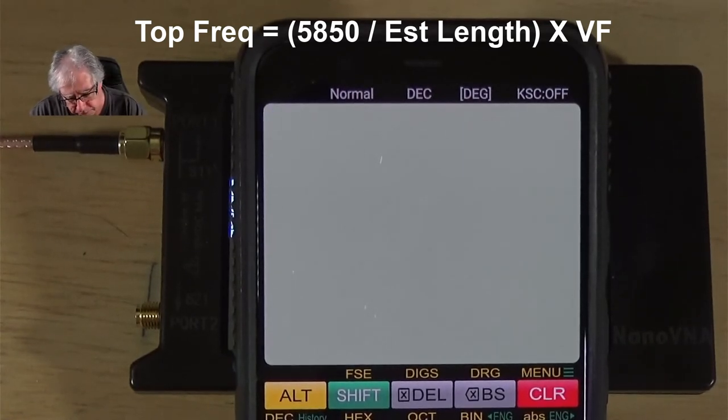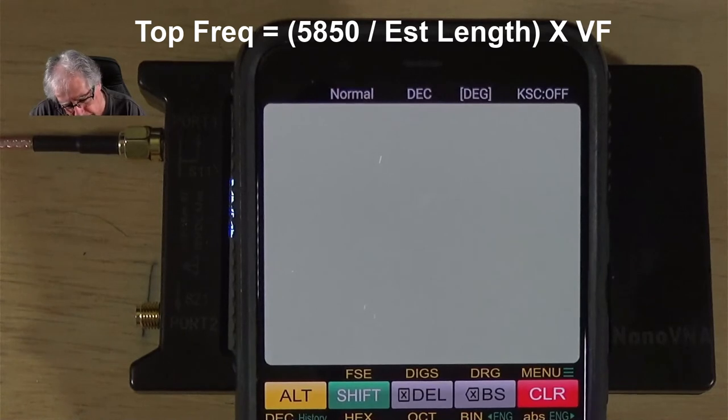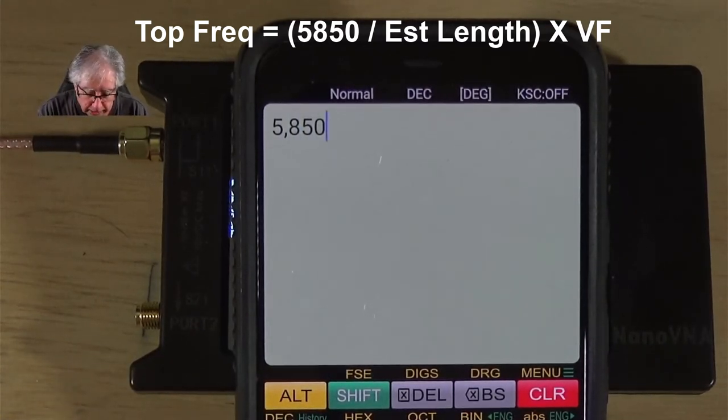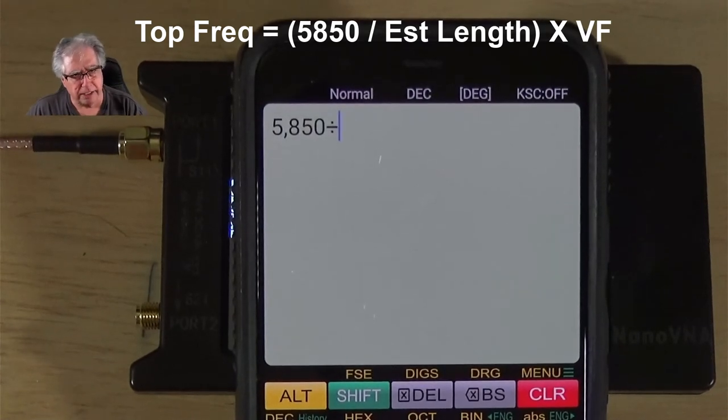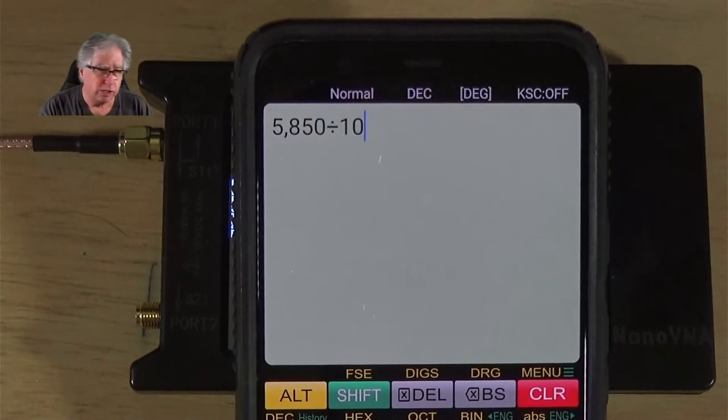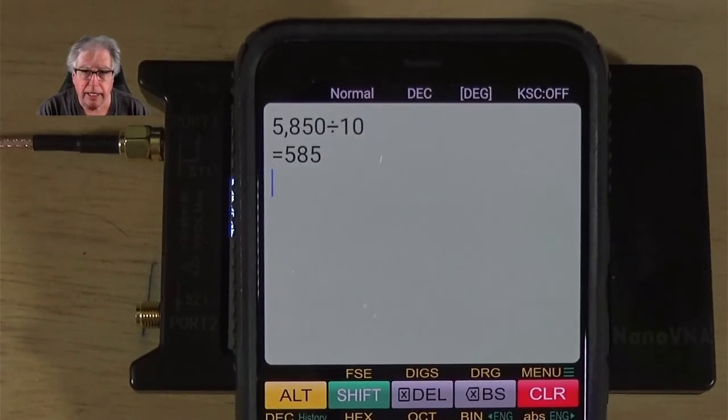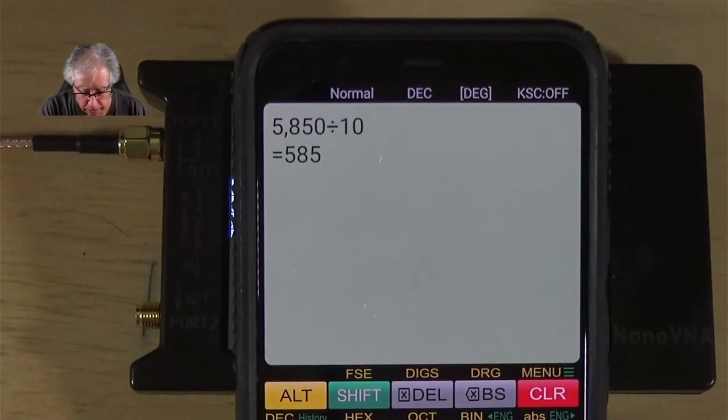It was done by a gentleman, W2AEW, and it seems to work pretty well. The formula, actually, is taking this mythical number, which is 5850. I'm not sure where he determined that, but we'll go ahead and use that. And, divide it by the estimated number of meters that you believe the cable to be. It turns out that the longer the cable is, the lower the frequency span you can do. But, as you get into higher or shorter cables, you need a higher frequency.